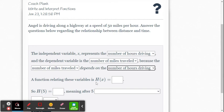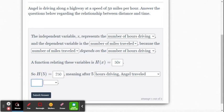So a function relating the variables is H of X equals what? Well, X is number of hours, and we're going to go 50 miles per hour. So that's going to be 50X. H of 5 would be, substitute 5 for X. 50 times 5 is 250. H of 5 is 250, meaning after 5 hours of driving, Angel has traveled 250 miles.